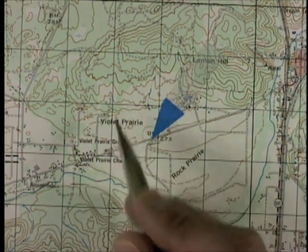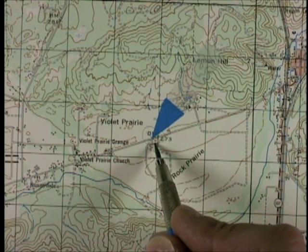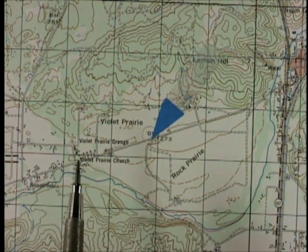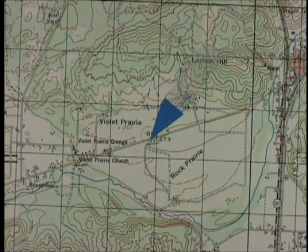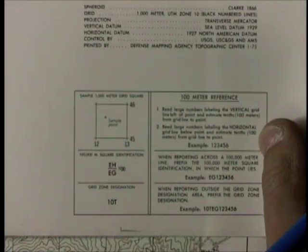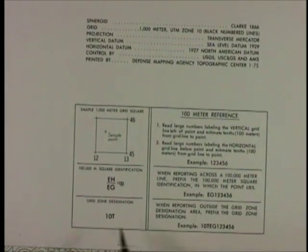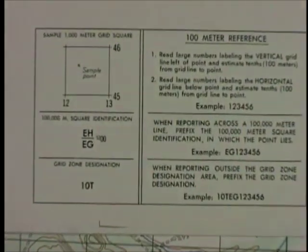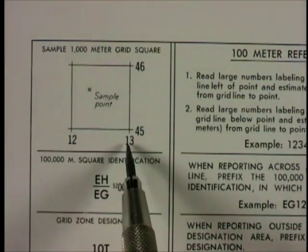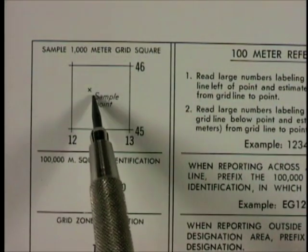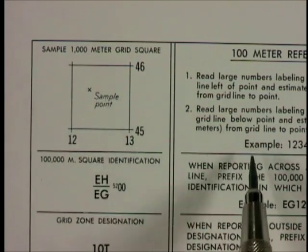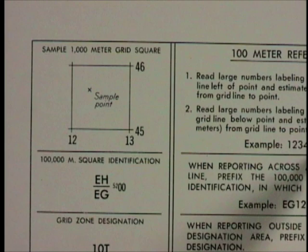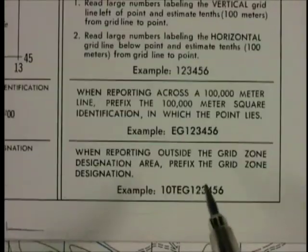There are other things to keep in mind that we'll talk about later. Precision accuracy and the way GPS is recorded will be discussed entirely separately. Overall, though, if you forget any of this stuff, you don't have to bring this video into the field — simply look at the bottom of your map. They all have a cheat sheet that tells you to read across then up, how to subdivide the grids, how to get down to 10-meter accuracy, and how to refer to the map if you're in larger areas, which we'll talk about in another video.